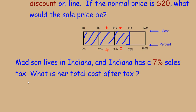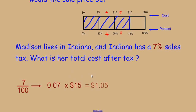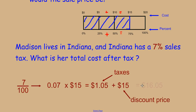To find the tax, we convert 7% to a fraction: since percent means per 100, it's 7 per 100, or seven hundredths, written as the decimal 0.07. Since we're finding 7% of her sale price, 'of' tells us to multiply. We get $1.05, but that is only the tax — we still need to add the discounted price. Adding those together gives us $16.05 for Madison's Halloween costume.